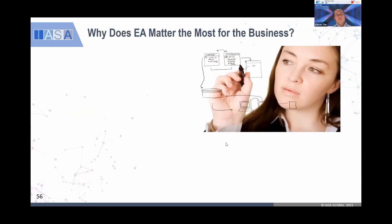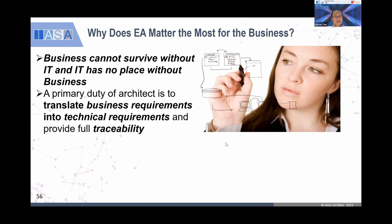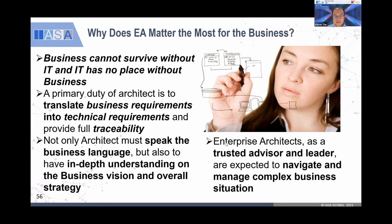What does EA matter most for the business? Business cannot survive without IT, and IT has no place without business. So we have no choice — if you want to deliver value, if you're from IT you need to understand the business. And today, business people also need to know about technology because we are living in the digital era. The primary duty of an architect is to translate business requirements into technical requirements and provide full traceability — if someone asks why something happened, I can show them the historical route. Not only must architects speak the business language, but they must have in-depth understanding of the business vision and overall strategy.